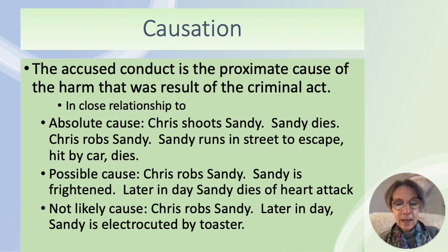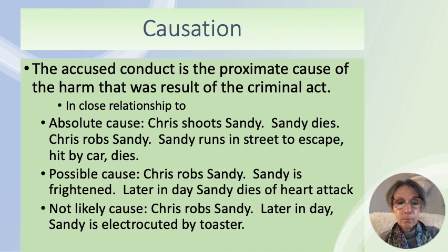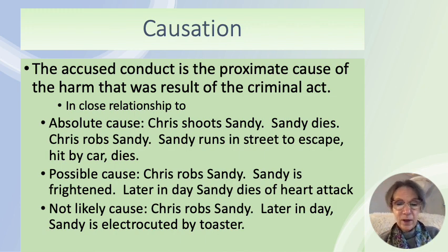A 'not likely' causation example: Chris robs Sandy, and later in the day Sandy is electrocuted by a toaster. You might argue Sandy was so shaky and upset after being robbed that they spilled water near the toaster and got electrocuted. That connection is much harder to prove. The examples illustrate different levels of causation a prosecutor must navigate, from absolute to possible to not likely.